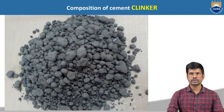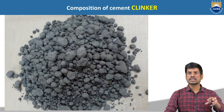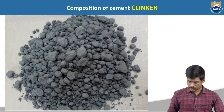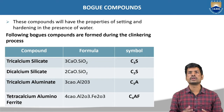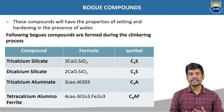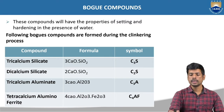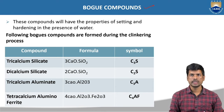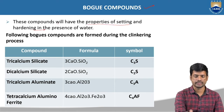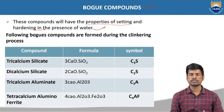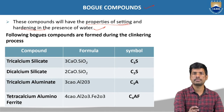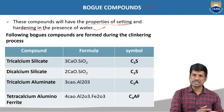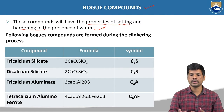Coming to the composition of cement clinker — after formation of this clinker material in the manufacturing process, what are the different compounds which are forming in the clinker? Whatever the compounds which are formed during the chemical reaction after the hydration process, we will be getting some compounds called Bogue compounds. These Bogue compounds will be formed during the reaction with water and will have the properties of setting and hardening in the presence of water, and the strength development will also be affected by using these compounds.